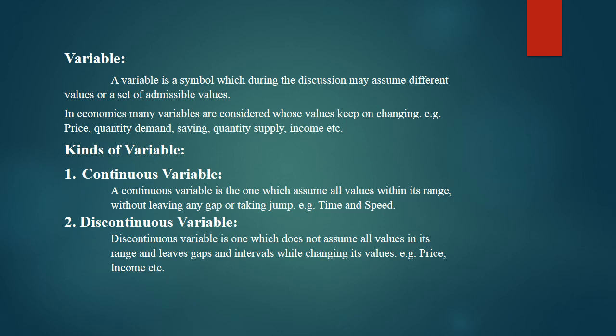The second one is the discontinuous variable. A discontinuous variable is one which leaves gaps and intervals while changing in its value. When the value of any quantity changes and there are gaps and intervals in those changes, then we call it a discontinuous variable. A common example is price — when price changes, there will be intervals and gaps.